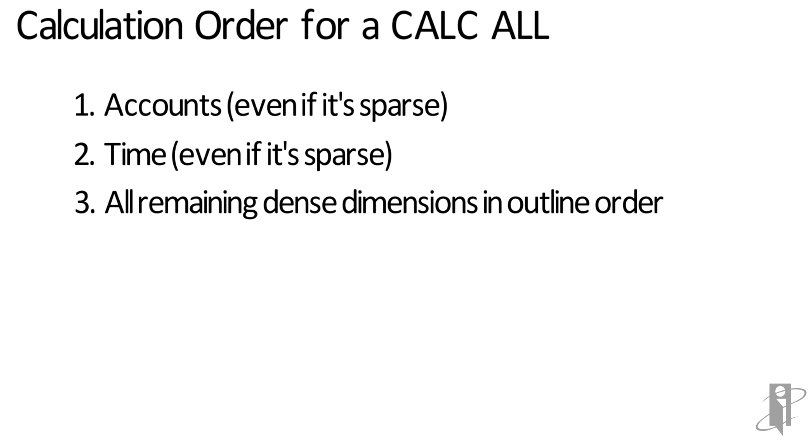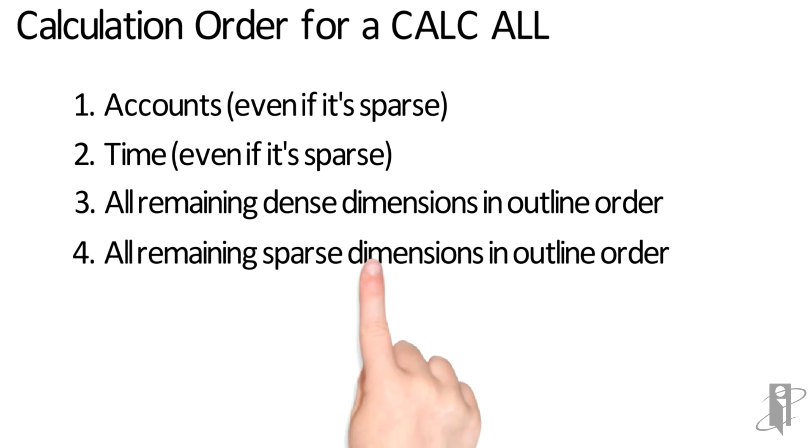Followed by all the dense dimensions in the order they're in the outline, followed by all the sparse dimensions in the order they're in the outline. If accounts and time are marked as dense dimensions this is going to result generally in one pass through the database.